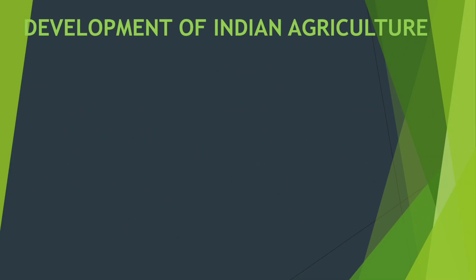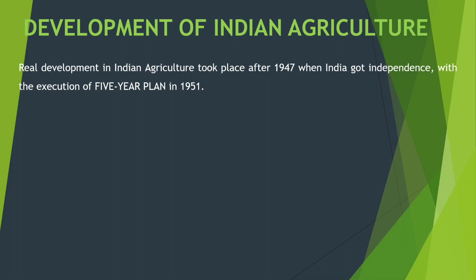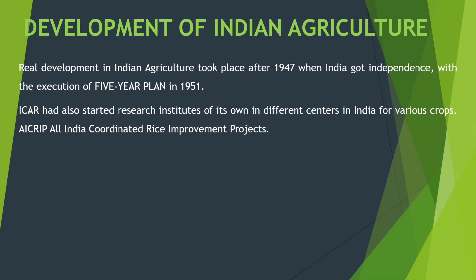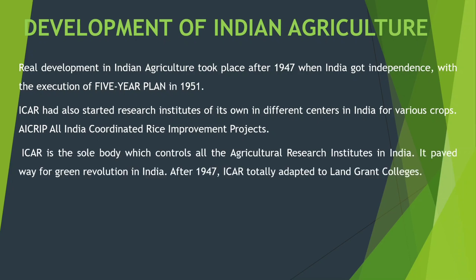Real development in Indian Agriculture took place after 1947 when India got independence, with the execution of the 5-year plan in 1951. Independence के बाद 5-year plan बनाया गया था India में। ICAR had also started research institutes of its own in different centers in India for various crops — AICRIP: All India Coordinated Research Improvement Projects. ICAR is the sole body which controls all the agricultural research institutes in India, and it paved the way for the green revolution in India.